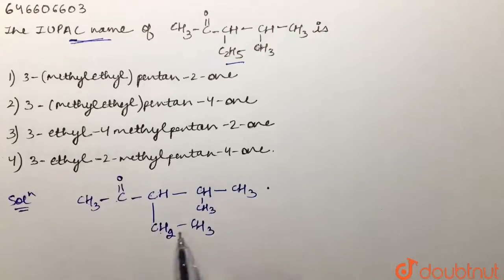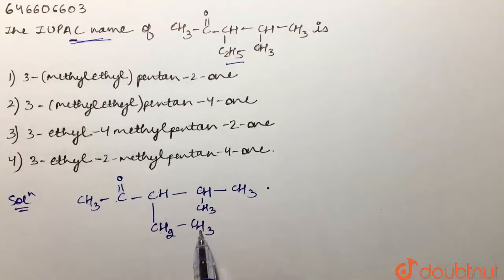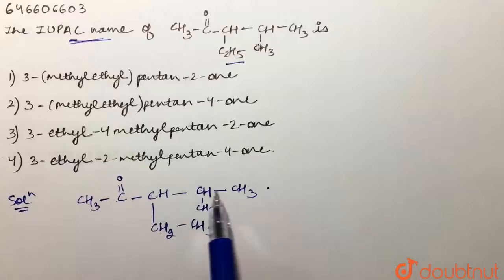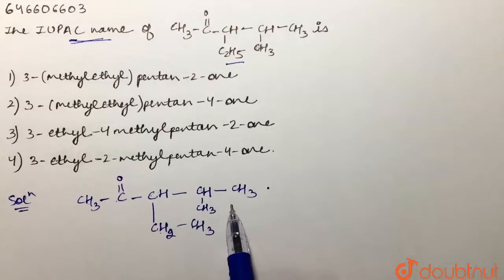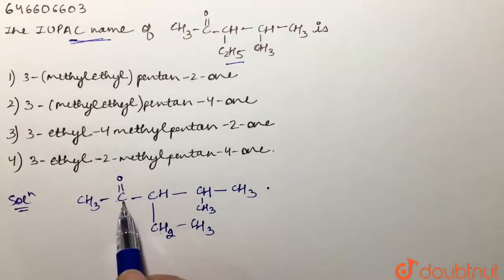We're going to take this chain because we have CO over here. We are not getting a longer chain by going another route because we would have fewer substituents — we can only have one substituent on that chain. So we take this chain so that we have both substituents present on our parent carbon chain.